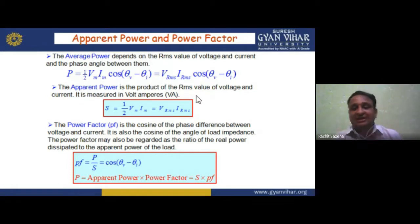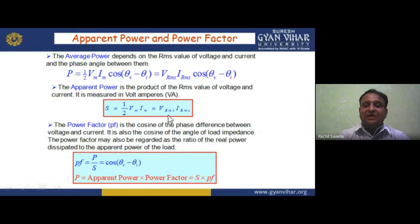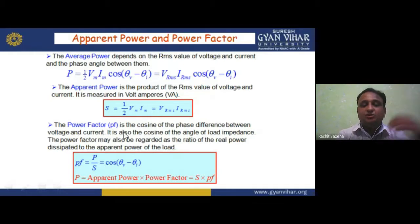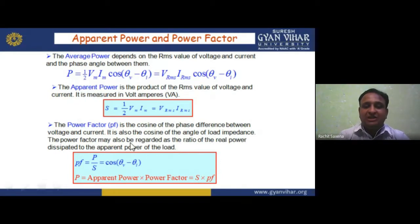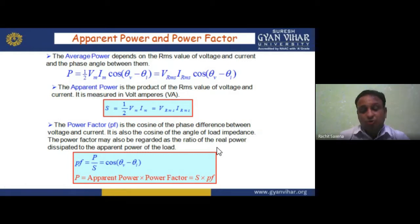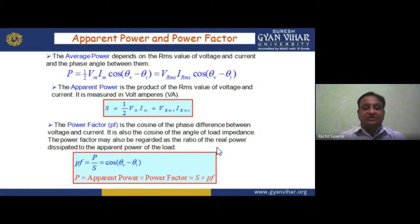Apparent power S is the phasor sum of active and reactive power: S = (1/2)Vm·Im = Vrms·Irms. Power factor is the cosine of the phase difference between voltage and current. It is also the ratio of resistance to impedance, or the ratio of real (active) power to apparent power: PF = cos(θv − θi) = P/S = R/Z. Active power P = S × PF.